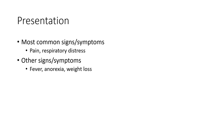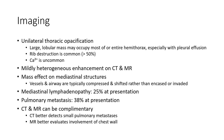The most common signs and symptoms are respiratory symptoms. Other signs and symptoms include anemia. Unilateral thoracic opacity with a large globular mass may occupy most of the hemithorax, especially with pleural effusion. Rib destruction is common, in more than 50% of cases. Calcium deposit is uncommon.